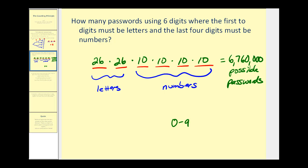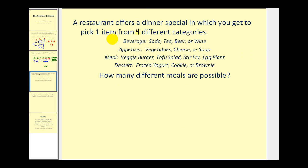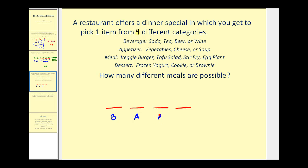A restaurant offers a dinner special in which you get to pick one item from four different categories, as listed here. How many different meals are possible? We have four independent events — one for each category. The first event is for the beverage, the second for the appetizer, the third for the meal, and the fourth for the dessert.